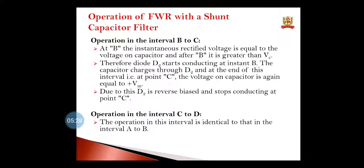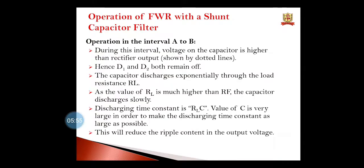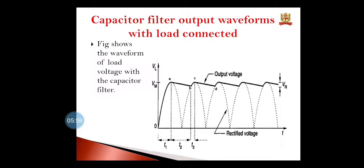Basically, what you have to understand is: in the positive half cycle at the output of the rectifier, when the diode is on the capacitor is charging, and when the diode is off the capacitor starts discharging. This cycle goes on and you get ripples at the output across the load resistor, as shown by the dark line — and these are called ripples.